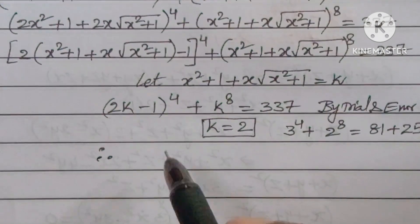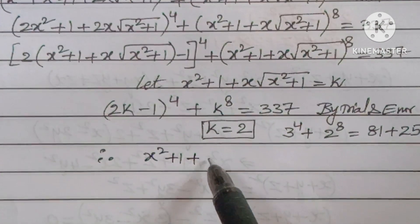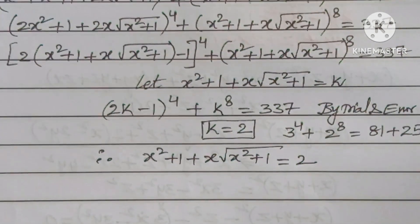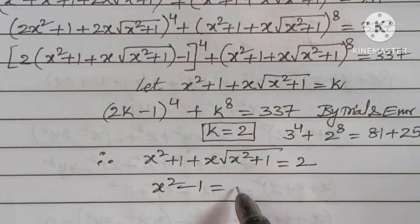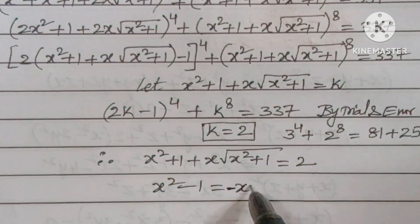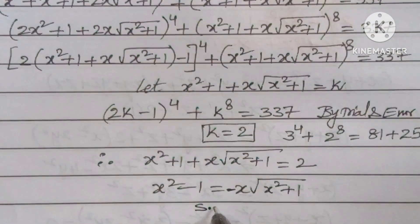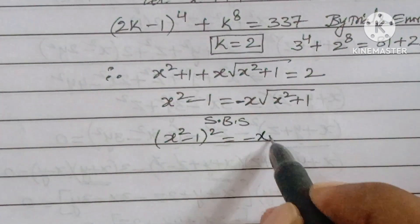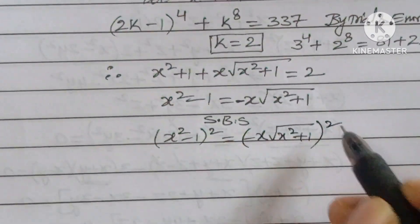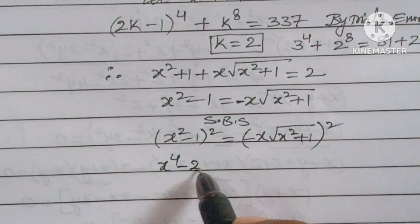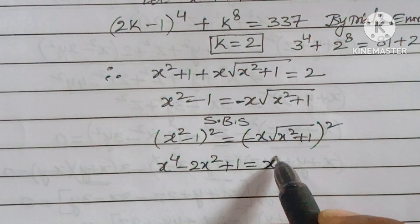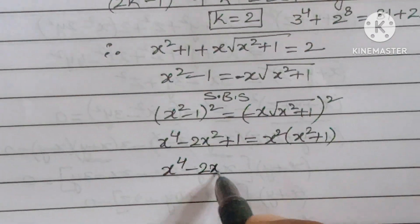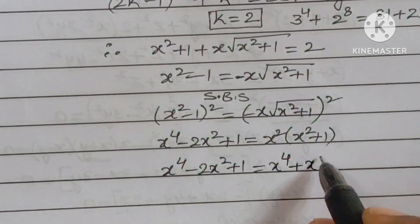Therefore x² + 1 + x√(x² + 1) = 2, which means x² − 1 = −x√(x² + 1). Squaring both sides: (x² − 1)² = x²(x² + 1), giving x⁴ − 2x² + 1 = x⁴ + x². The x⁴ terms cancel, leaving −2x² + 1 = x², so x² = 1.